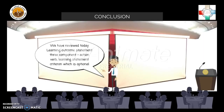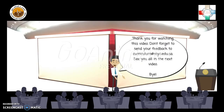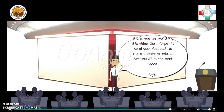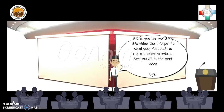We have reviewed today the three components of a learning outcome statement: Action Verb, Learning Statement, and Criterion — which is optional. Thank you for watching this video. Don't forget to send your feedback to curriculum@rsic.edu.se. See you in the next video. Bye.